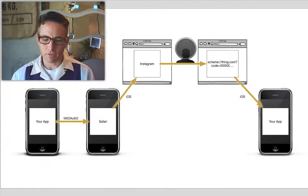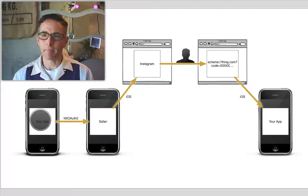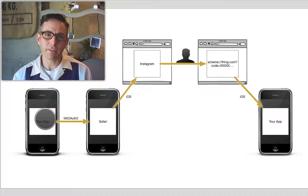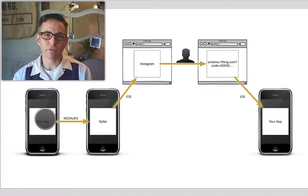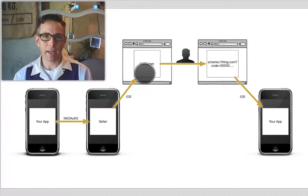Let's look at the way we previously taught you to execute our Instagram app. Starting with your app running on the phone, using the NXOAuth2 CocoaPod, at the initiation of a user clicking the login button, you would use NXOAuth2 to kick control from your application to Safari by opening a web browser. Safari would then go to Instagram's OAuth2 page whose URL you found by registering your application in a separate browser window.